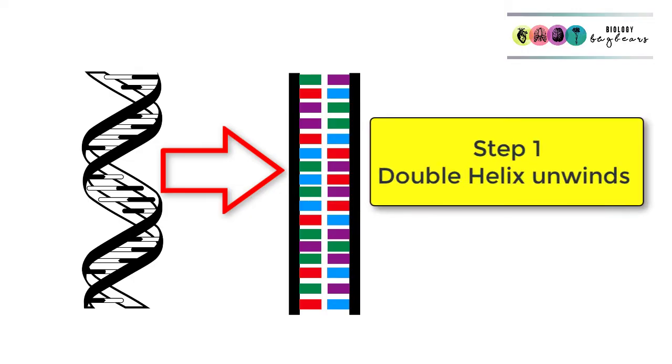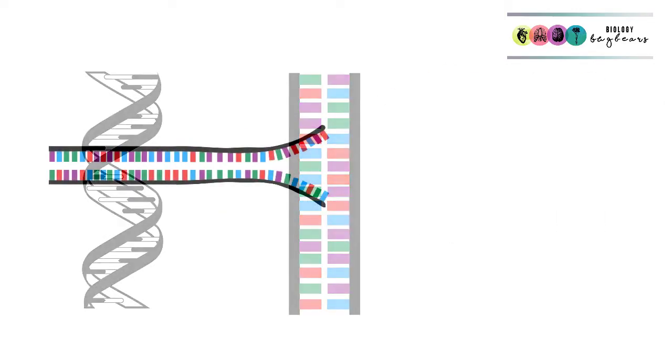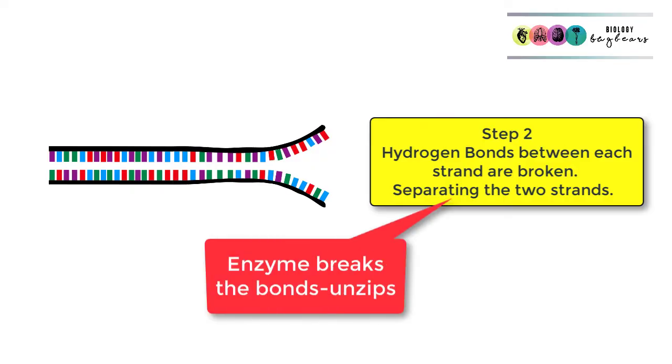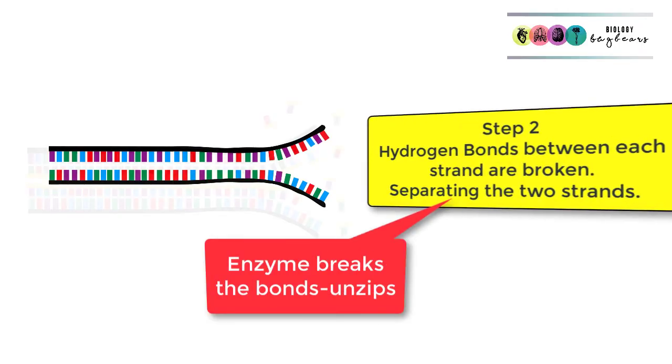Step number one in DNA replication is the double helix unwinds. Step number two, the hydrogen bonds between each strand are broken and this separates the two strands.